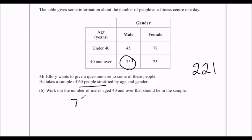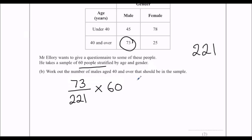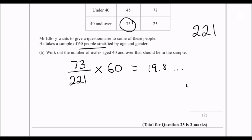We want the fraction of 73 over 221, and we multiply that by the sample size of 60. That gives us a decimal — 19.8 something. But because it's people, we can't have 19.8 people in the sample, so we have to round it to the nearest whole number, which in this case is 20 people. So we have 20 men aged 40 and over in the sample.